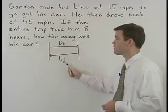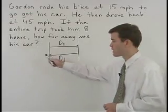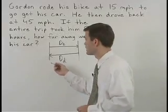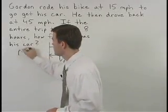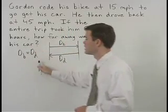You can see from the picture that these two distances are equal. So we can set up an equation that reads the distance that he bikes or DB equals the distance that he drives, DD.